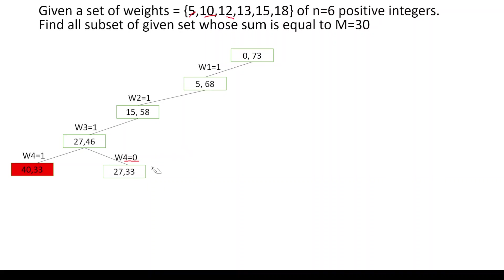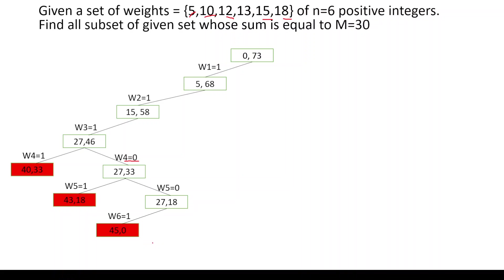If we are not adding w4, the other option is to add w5, which is 15. When we add w5 the total weight goes to 27+15 = 42, which is greater than 30, so we say w5 equal to 0. Ignoring w4 and w5, let's try adding w6. When we add w6 the weight again exceeds 30 — it becomes 45. There are no more elements left, so the remaining is 0. If we don't add w6 either, we get 27 with no elements available.